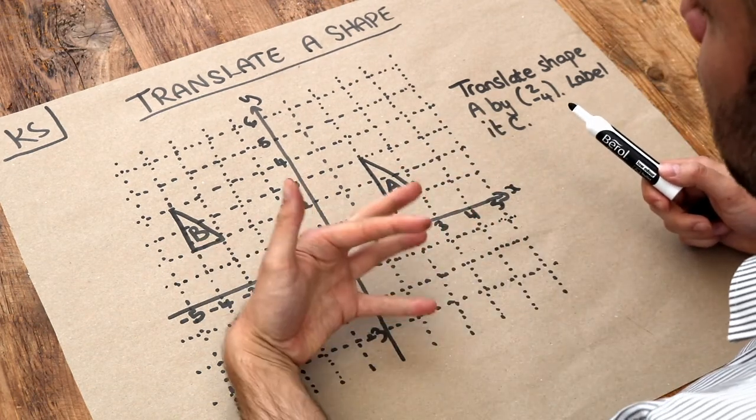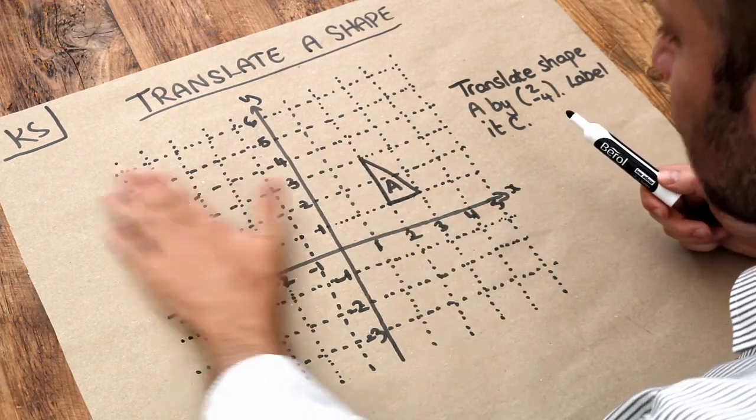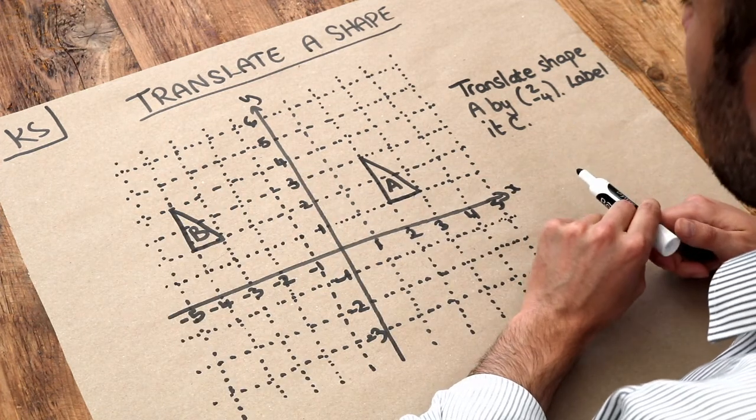It's exactly the same shape, the same way up and the same size. It's just shifted across the coordinate axes.